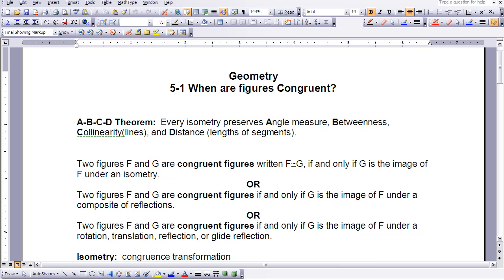And then the third definition goes so far as to just name the different types of composite reflections: rotation, translation, glide reflection, and then just the basic reflection. So we have three different definitions of congruent figures all saying the same thing, just using different terminology to help us remember or think about congruent figures.